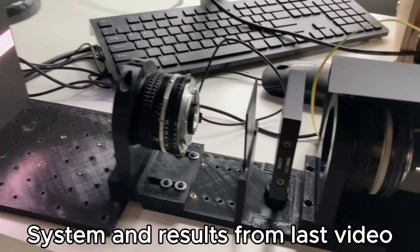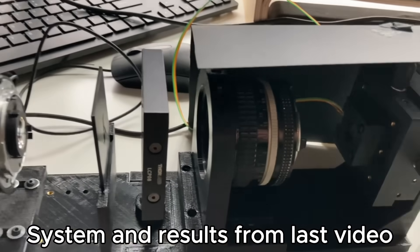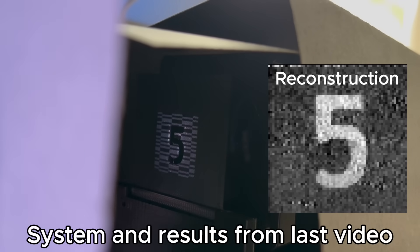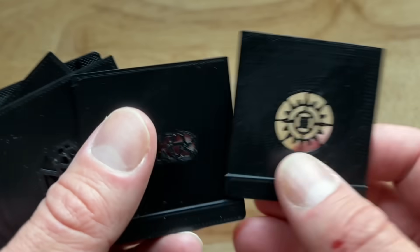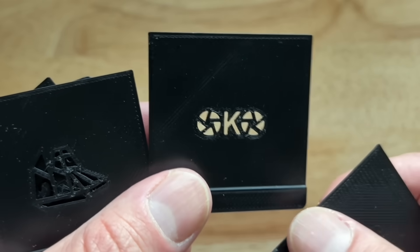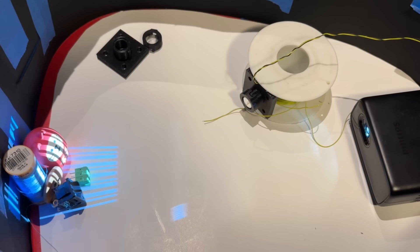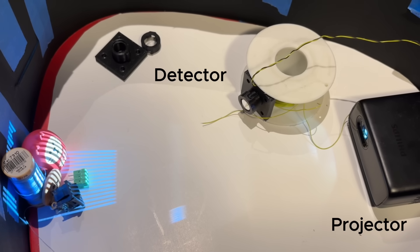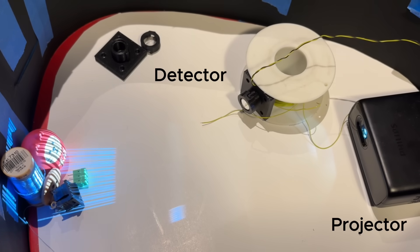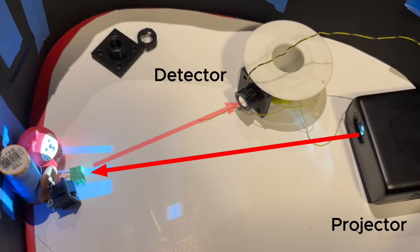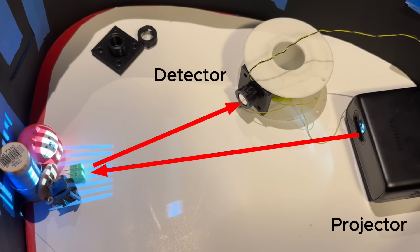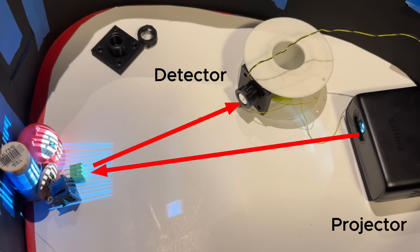The single pixel camera I built in that video worked, but it only imaged these 2D object masks I 3D printed. Not very interesting objects. So the first thing I wanted to improve was to have the light reflecting off the object, like a scene being imaged with a normal camera. The projector is set to illuminate the scene with the patterns, and the single photo detector is positioned to collect the reflected light. No 2D sensor.